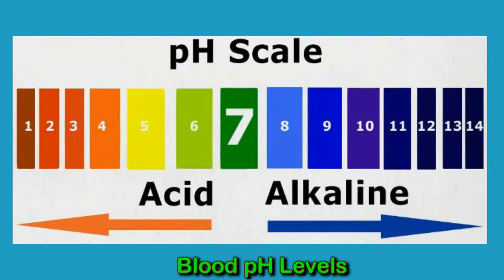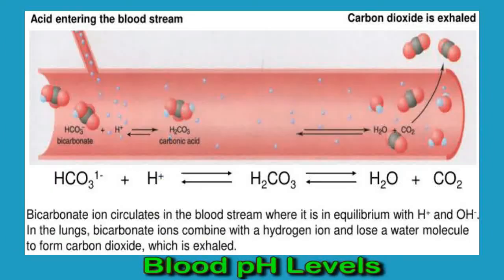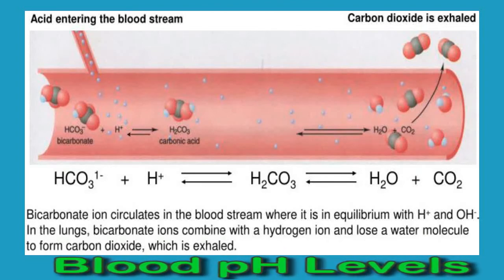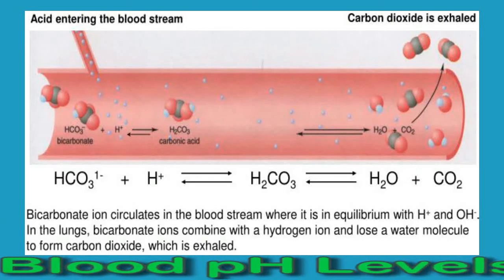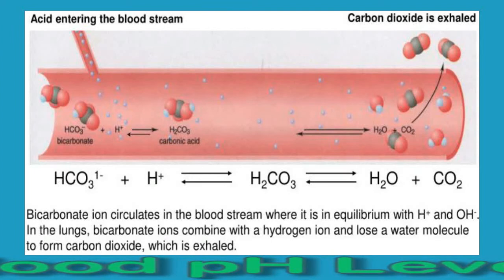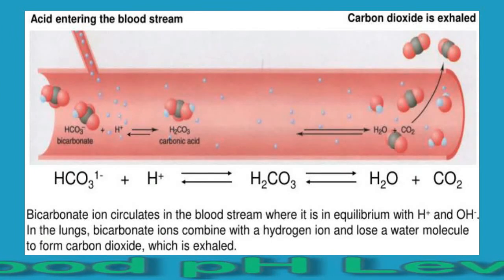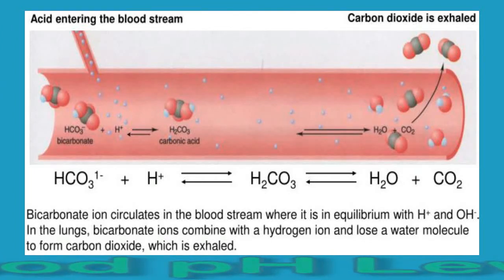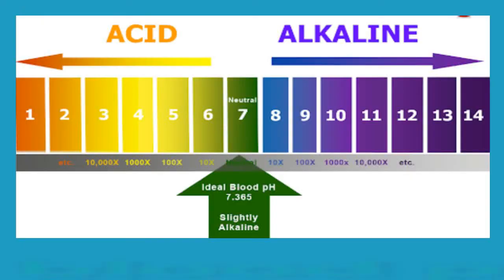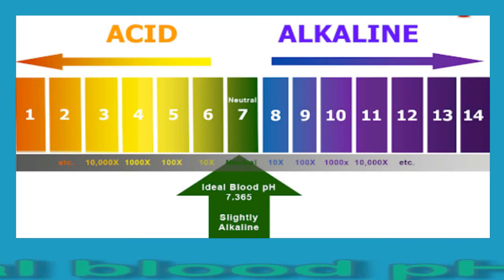Solutions with a high pH have a lower concentration of hydrogen ions and are alkaline or basic. The pH scale is a compact scale, and small changes in pH represent big leaps in acidity. This video will look at what the normal pH level of blood is and what can cause it to move outside the normal range, as well as what can happen to the body if blood pH levels go above or below the normal range. The pH of blood in the arteries should be between 7.35 and 7.45.